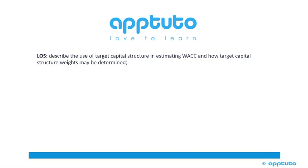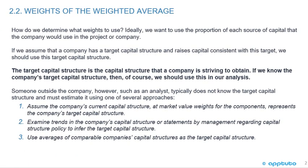This LOS describes the use of target capital structure in estimating weighted average cost of capital and how target capital structure weights may be determined. Ideally, we want to use the proportion of each source of capital that the company would use in the project or company. If we assume that a company has a target capital structure and raises capital consistent with this target, we should use this target capital structure.